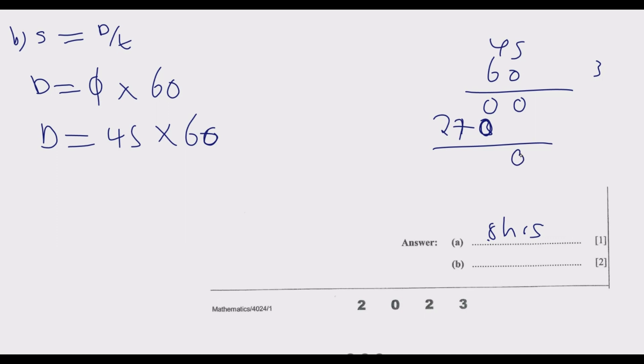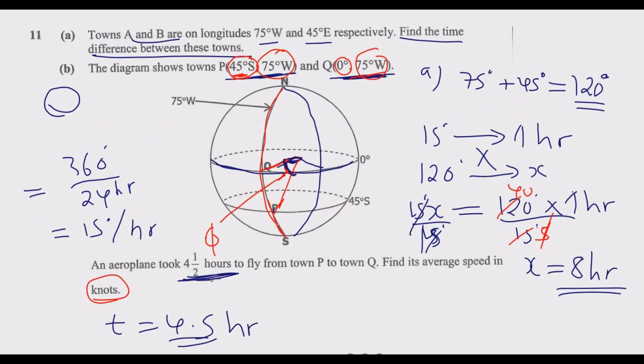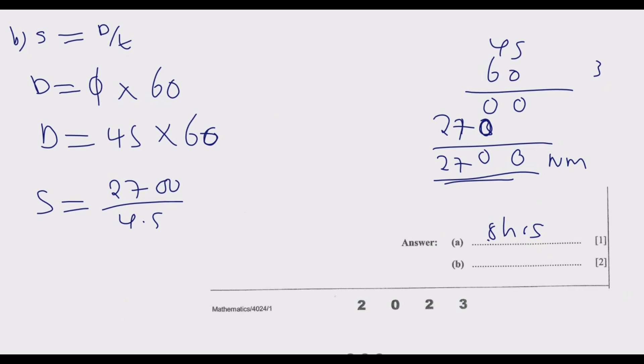Now we know time, we know distance, so it's easy to find speed. Speed is equal to 2700 divided by 4.5. The first thing that I can do is divide 3 into 4.5, so that is 1.5. 3 into 27 is 9. Then I end up with 600, so 600 knots.